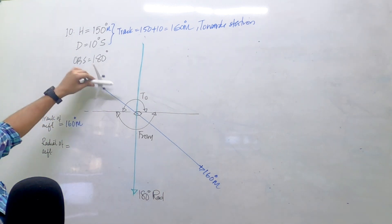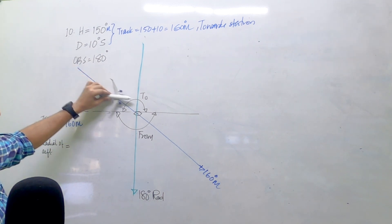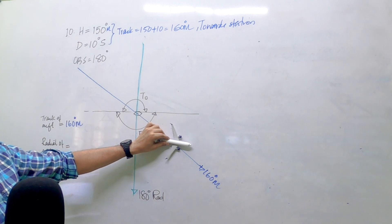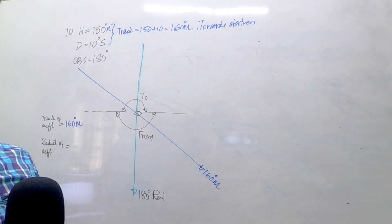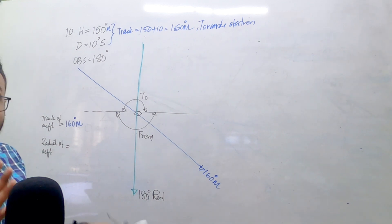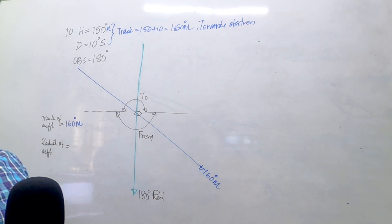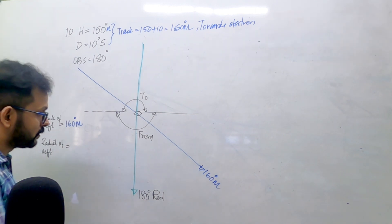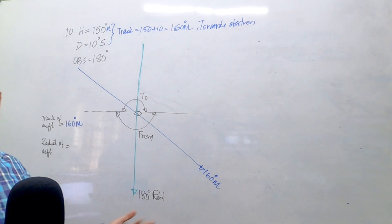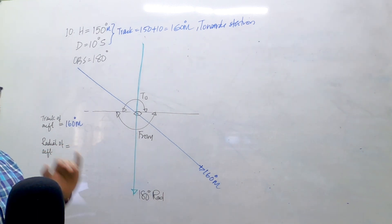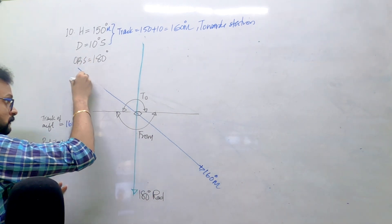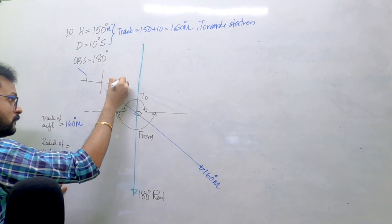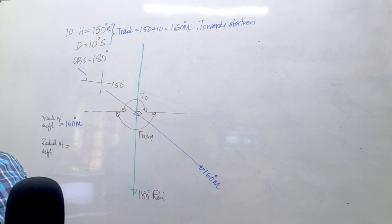Is the aircraft on the two side of the radial, on a heading of 150? Moving towards doesn't mean it's on the two sides - you have to combine heading and the radial to understand that. Therefore, the aircraft is placed somewhere here on a heading of 150, tracking towards the station.